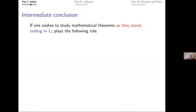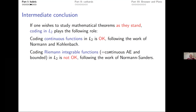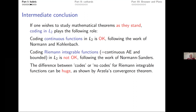The point is: if you're serious about analyzing mathematical theorems as they stand, you can code continuous functions — Norman and Kohlenbach showed that's fine. But as soon as you step outside the continuous world, even a little — to Riemann-integrable functions, which are continuous a.e. and bounded — basic theorems like Arzela's convergence theorem have very different logical strengths depending on whether they're formulated with or without codes. This is the best result showing that coding is a bad idea.